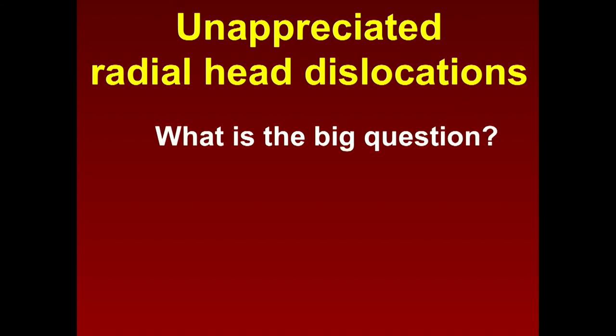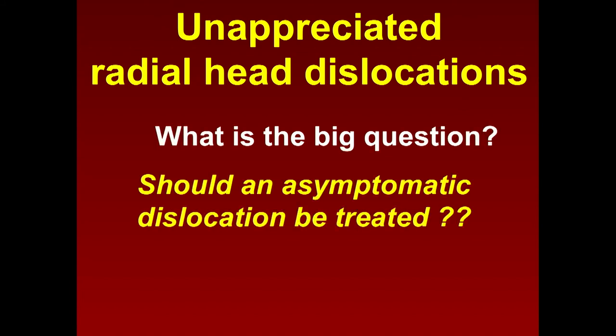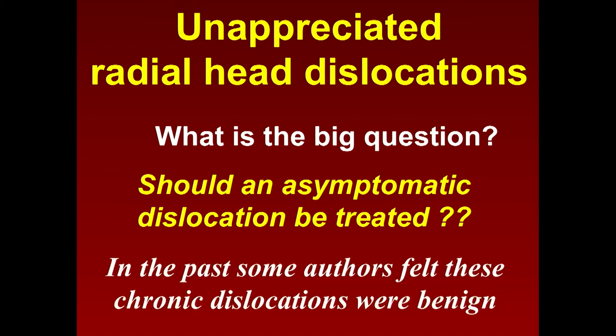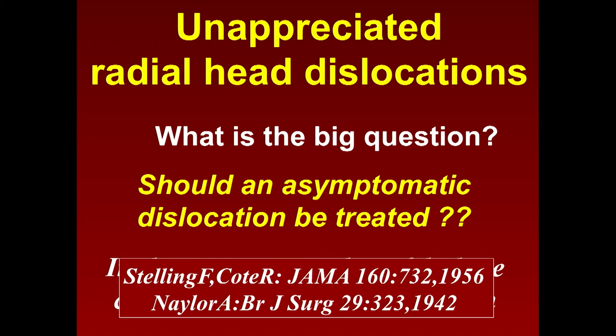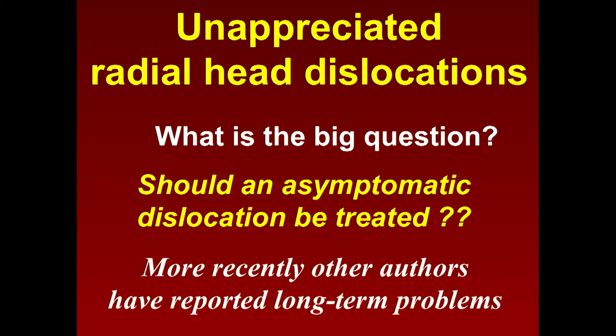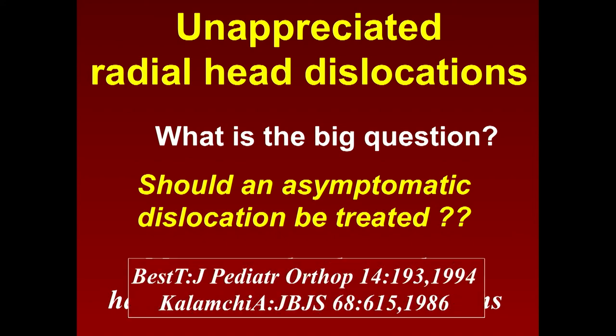With unappreciated radial head dislocations — if they're asymptomatic, should they be treated? There's debate. Some say these chronic dislocations are benign — just leave them alone. We don't have a lot of good long-term studies. Other people say there are long-term problems: valgus instability, inability to weight bear on the arms. Those people say you ought to be pretty aggressive with them.